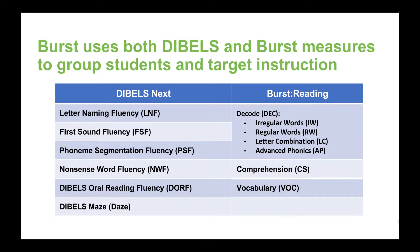Most of you are probably familiar with the DIBELS assessments. BIRST has three additional measures it uses to generate lessons that target the right skills for each group. The decode assessment has four sub-measures. You can learn more about each of the assessments by watching the short videos below and then practice going along. BIRST and DIBELS measures talk to each other in the BIRST system. The BIRST algorithm matches the progress monitoring measure to the instruction to determine how much progress each student has made in the nine days of instruction and to come up with the next set of catered lessons.